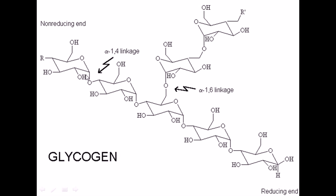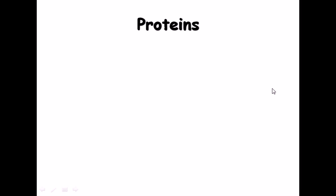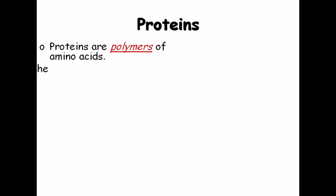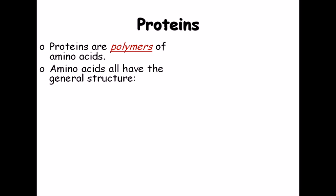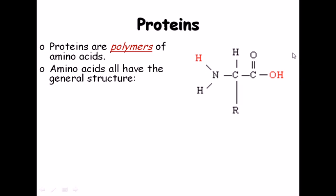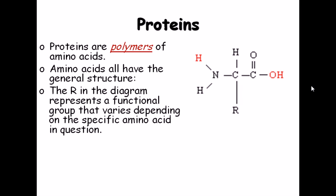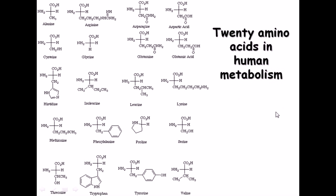Now let us look at proteins. Proteins are polymers of amino acids. All amino acids have a general structure made up of one amino group (NH2), one acid group (COOH), and one central backbone carbon called the alpha carbon. The R group in the diagram represents a functional group that varies depending upon the specific amino acid. There are 20 different amino acids present in human metabolism.